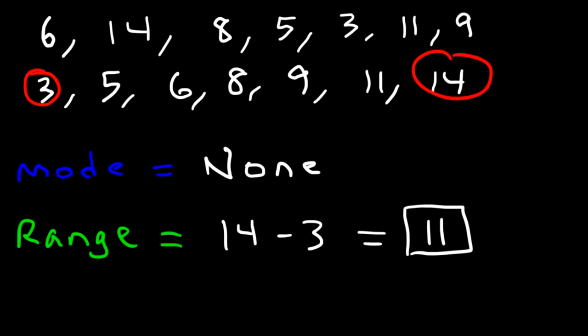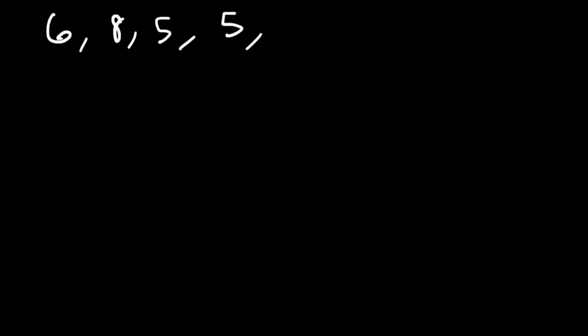So far, we've considered two examples in which we had an odd number of numbers in a data set — in this case, only 7 numbers. But what if we have an even number of numbers? For example, let's say if there are 8 numbers in a data set. Let's try this example: the numbers are 6, 8, 5, 5, 9, 8, 10, and 8. Go ahead, take a minute, and calculate the mean, median, mode, and range.